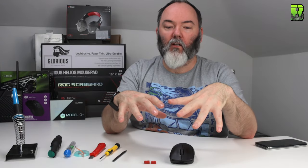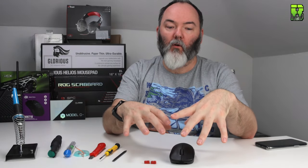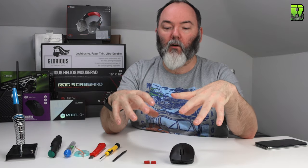You could also do this if you've got a double click problem with the G Pro Wireless and you can't RMA it to Logitech. You'll be able to swap it out for another Omron switch that you can get off eBay or AliExpress.